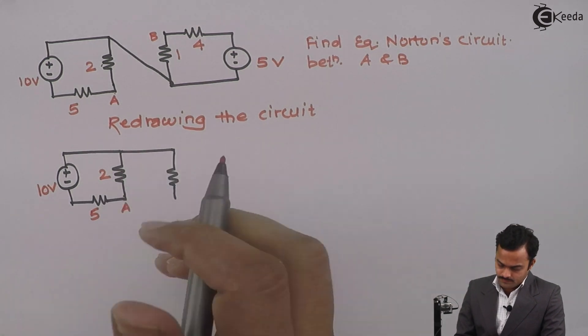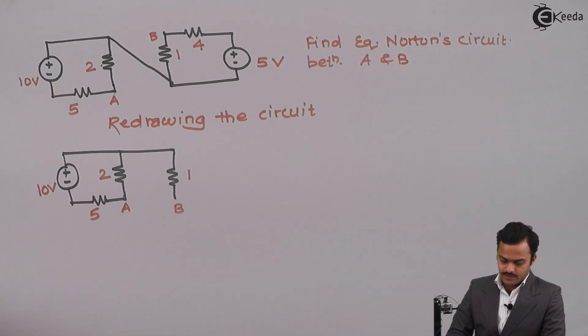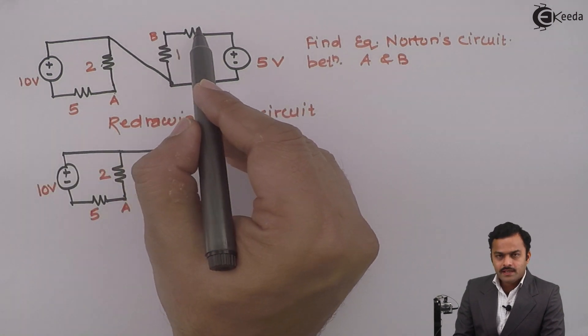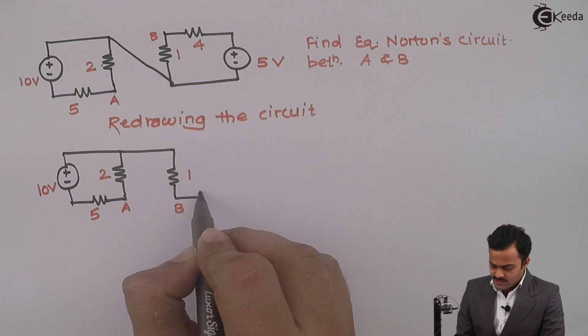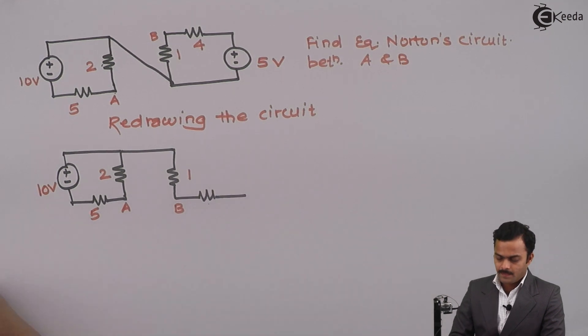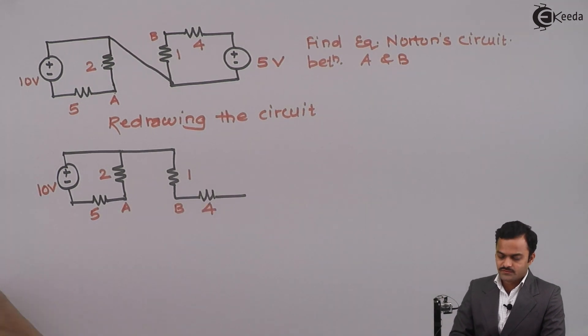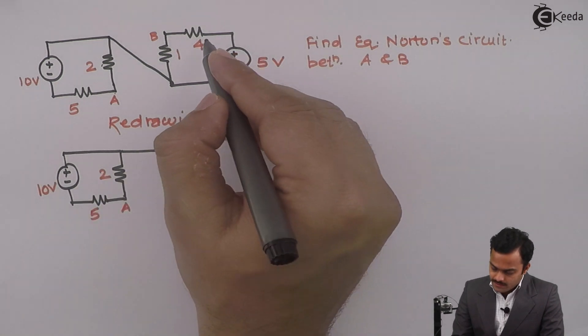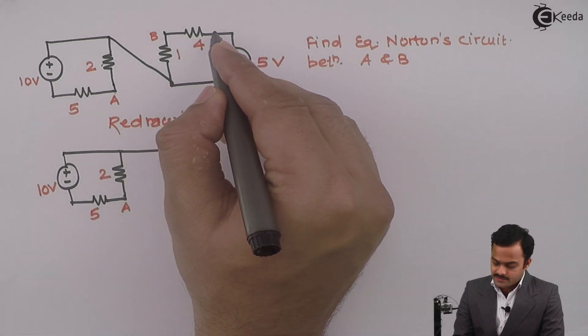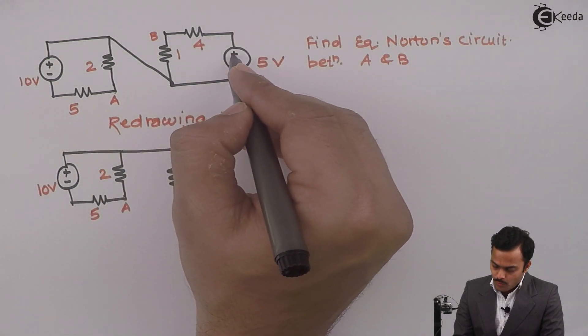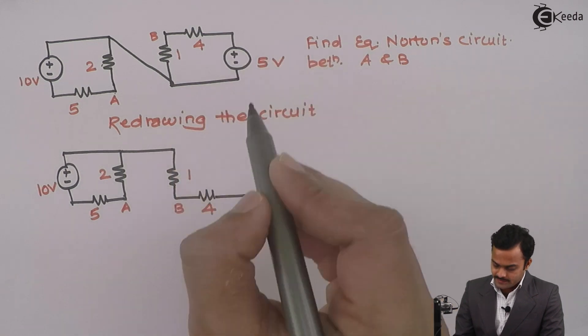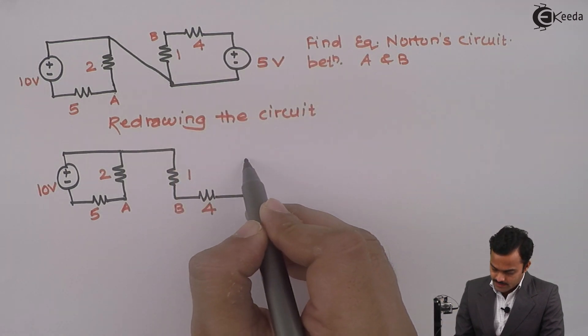1 ohm connected to B terminal. From B, 4 ohm resistance branch will start. So this is 4 ohms and this end of the resistance is connected to the positive terminal of the 5 volt battery, so it is like this.